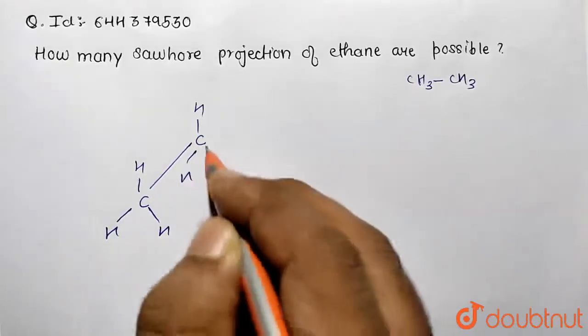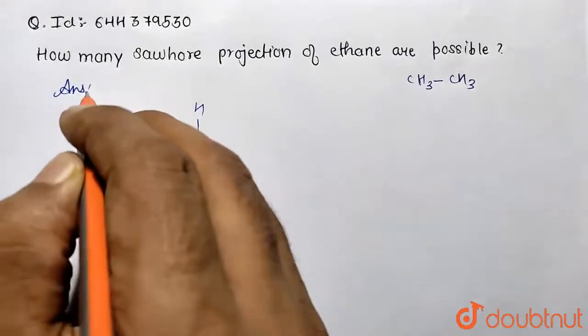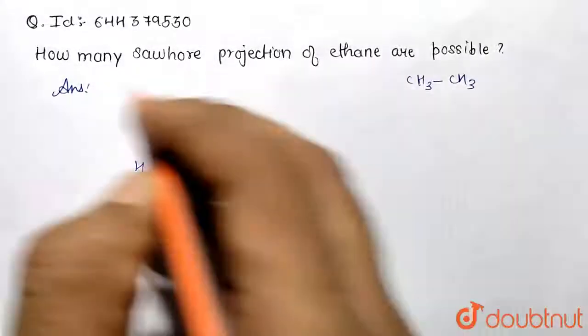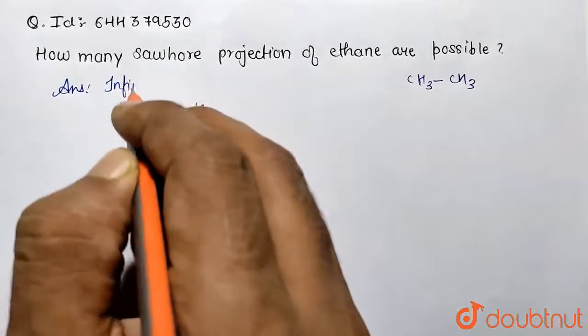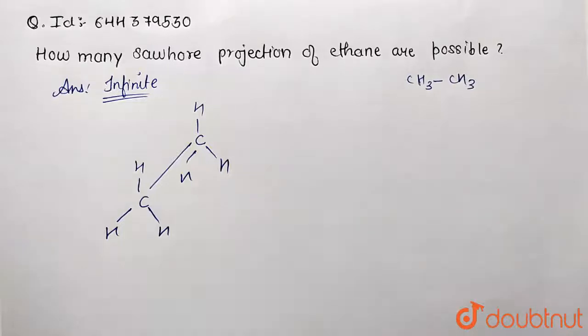Now there are infinite Sawhorse projections that can be drawn. Why? First of all, write the answer. How many Sawhorse projections of ethane are possible? Infinite. That means many number of solutions that we can't count. Why? What is the reason?